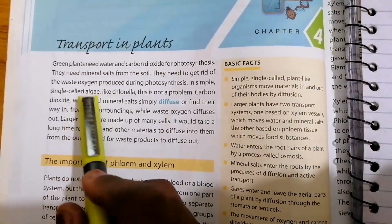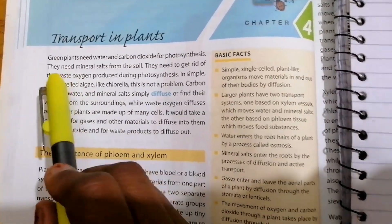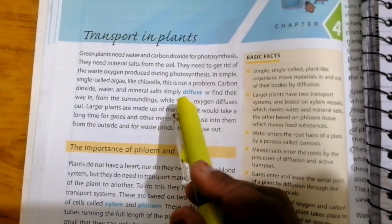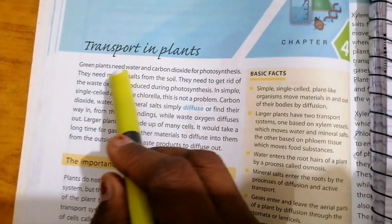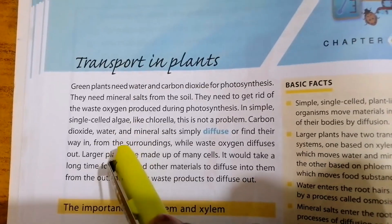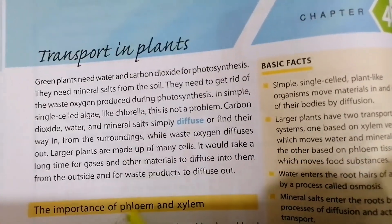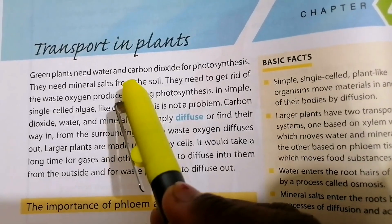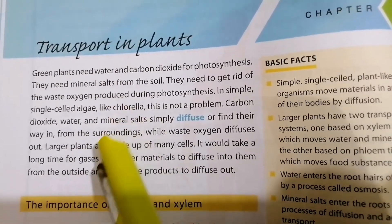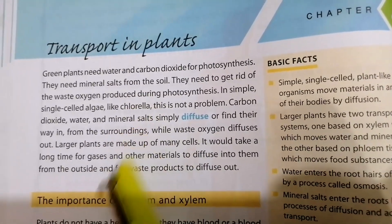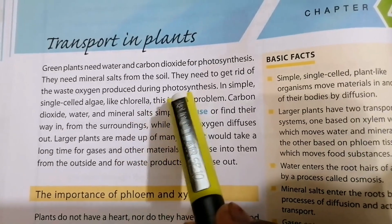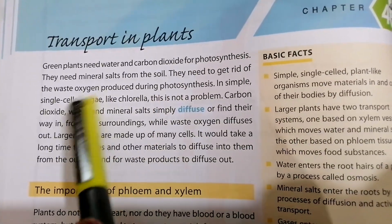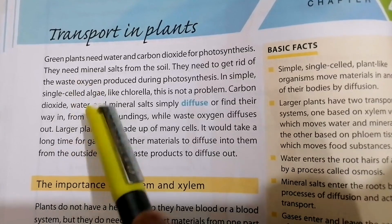So students, in this chapter we will learn that transportation in plants refers to how plants obtain their food, and how it travels from the roots, through the stem, and then to the leaves. We will also learn how plants use this food, water, and mineral salts for their survival.